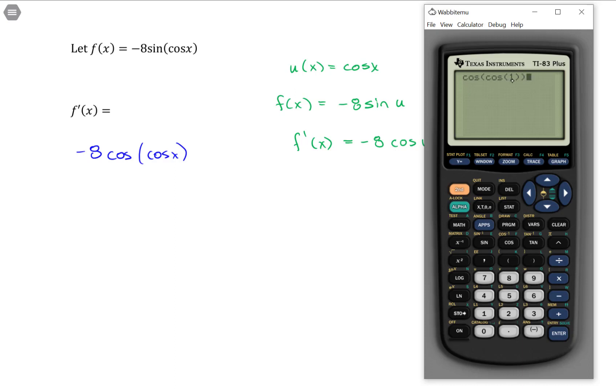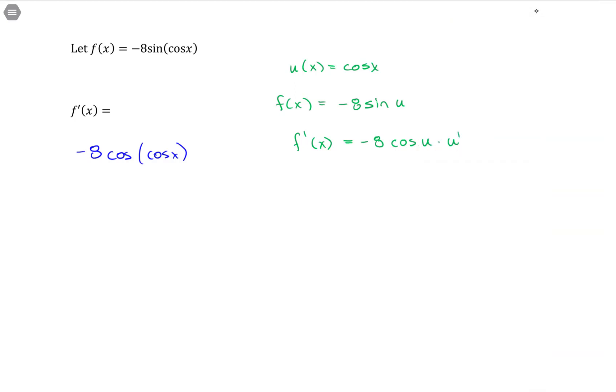The calculator will take the cosine of the value 1, whatever that answer is, plug it into cosine again, and it'll give you an answer. That's a perfectly valid thing, even though it looks strange. But then we multiply this by the derivative of the inside function.